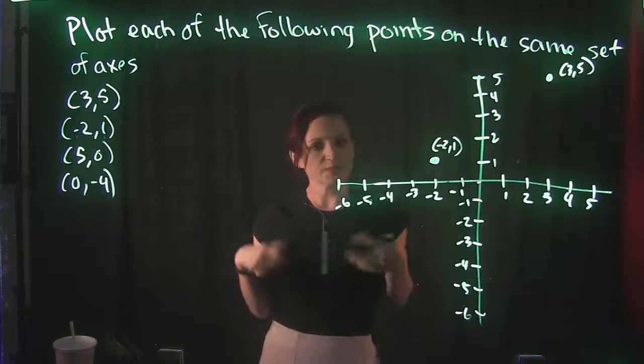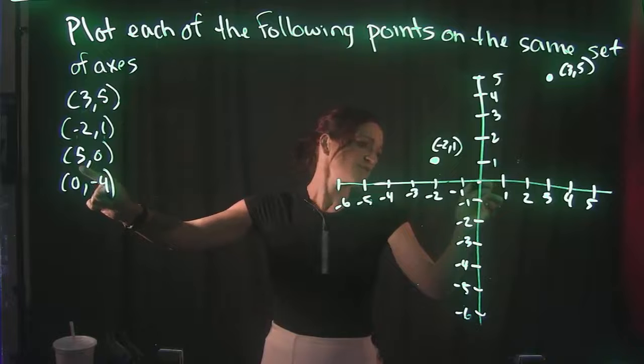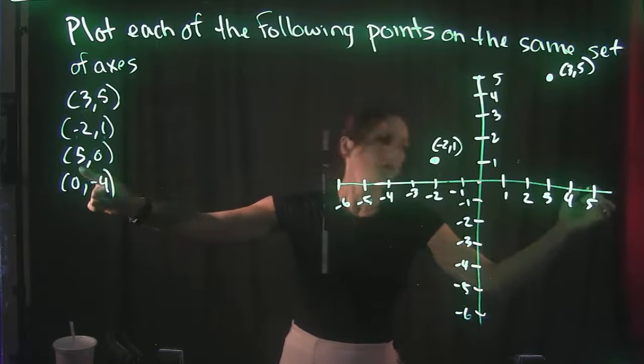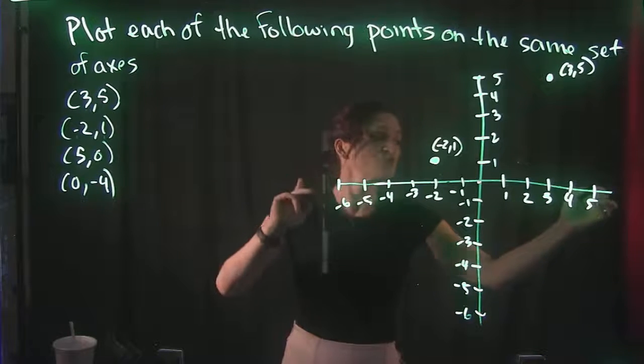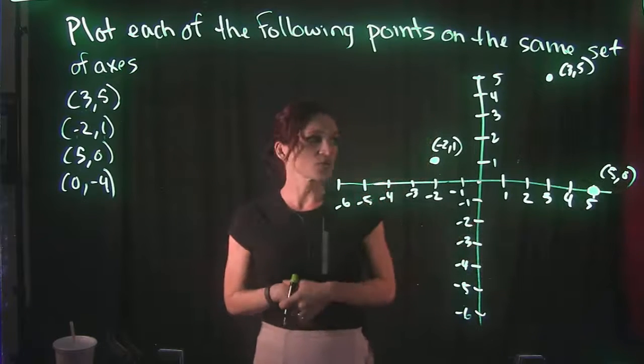Our third point is the point 5, 0. So new point, so we're starting at the origin again. That's a positive 5, so that means to the right 5. And that's a 0, which means we do not move up or down. So we stay put right over here, and that's what 5, 0 looks like.